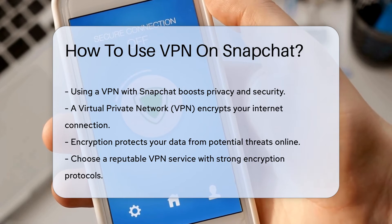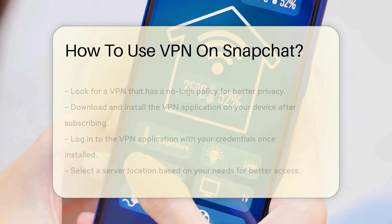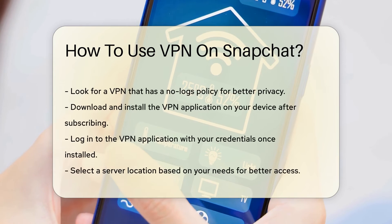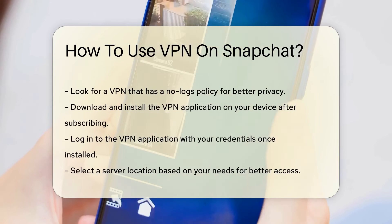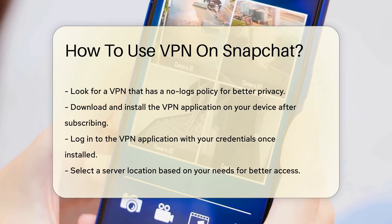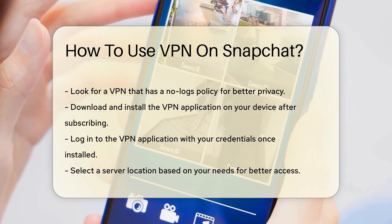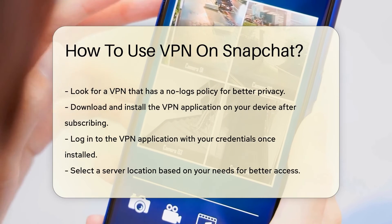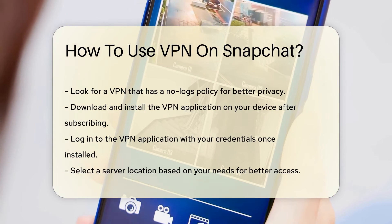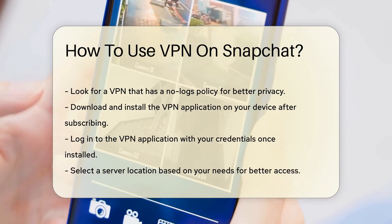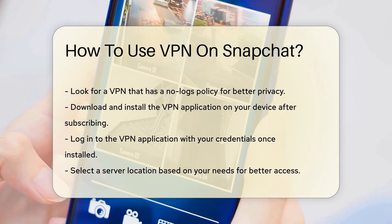To begin using a VPN on Snapchat, select a reputable VPN service. Look for features such as strong encryption protocols and a no-logs policy. After subscribing, download and install the VPN application on your device.